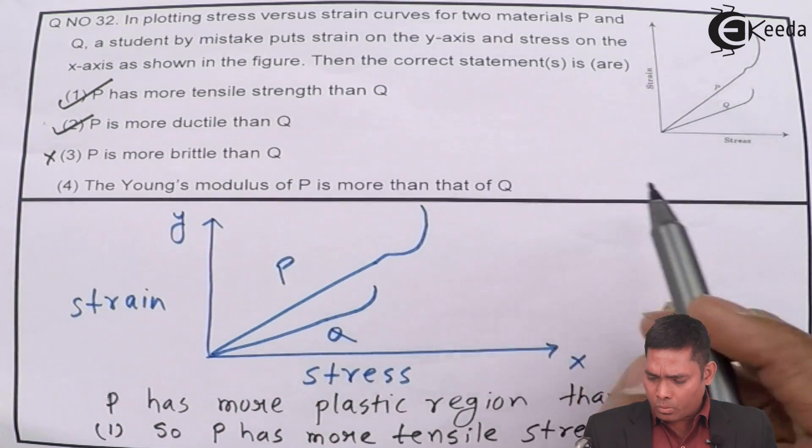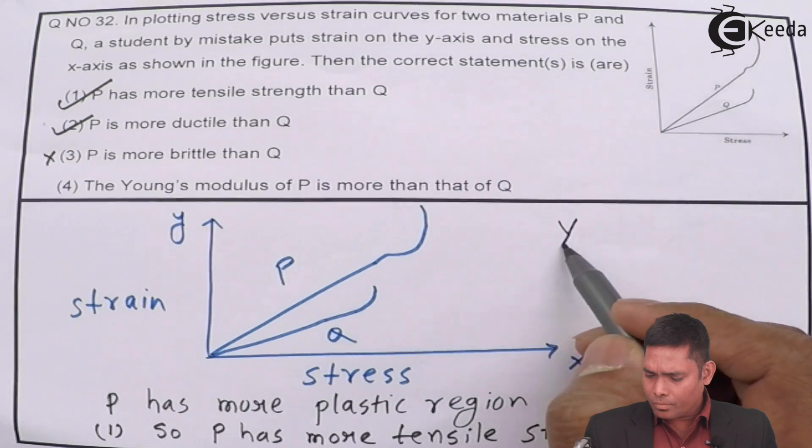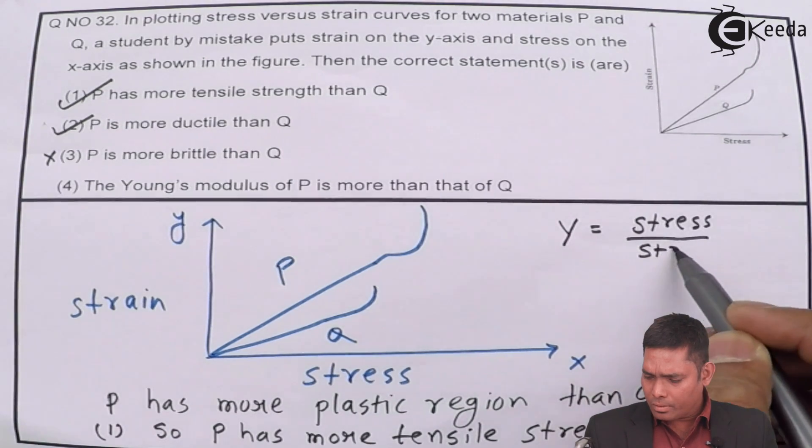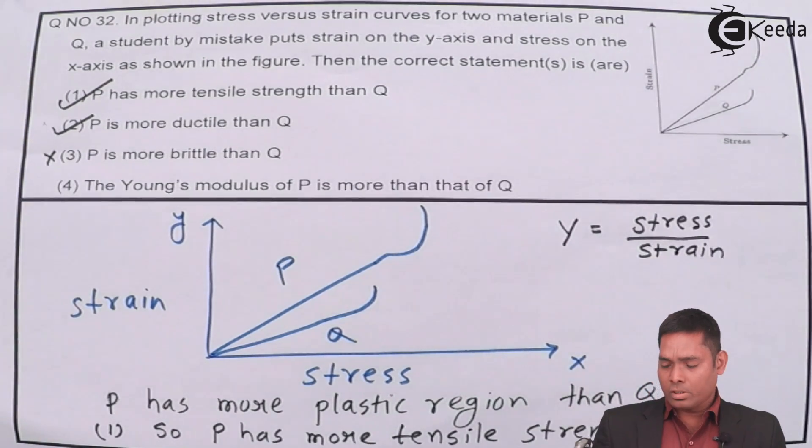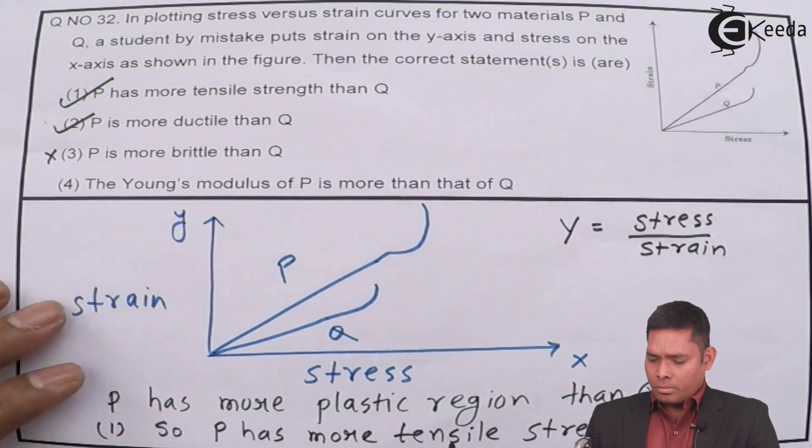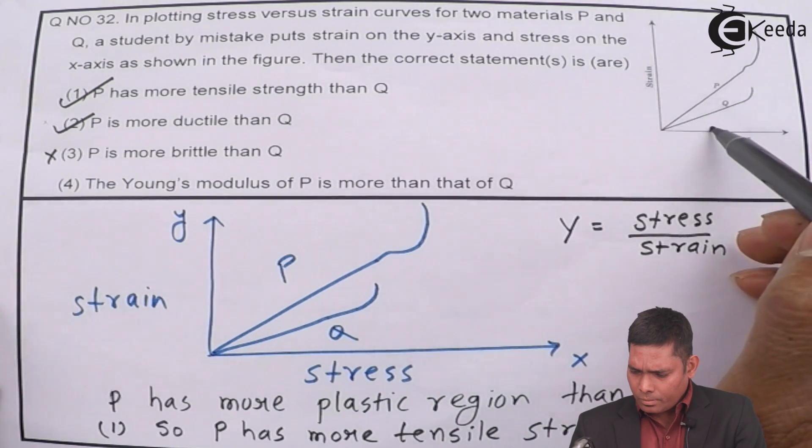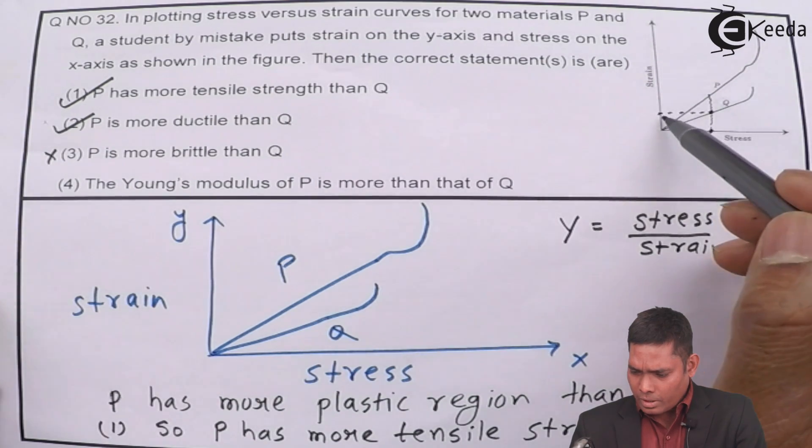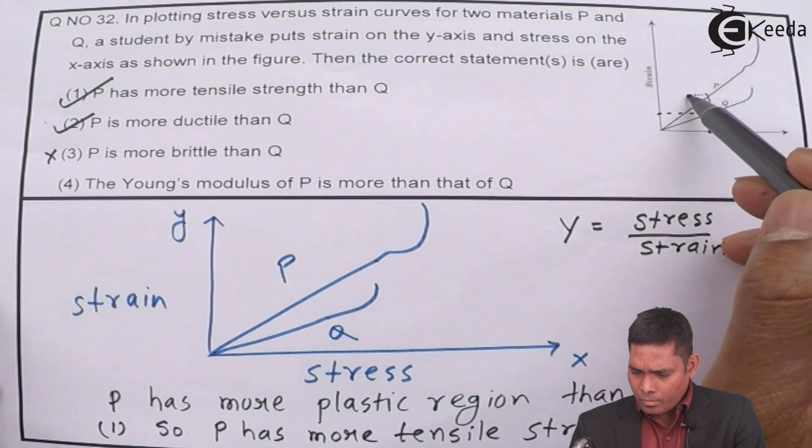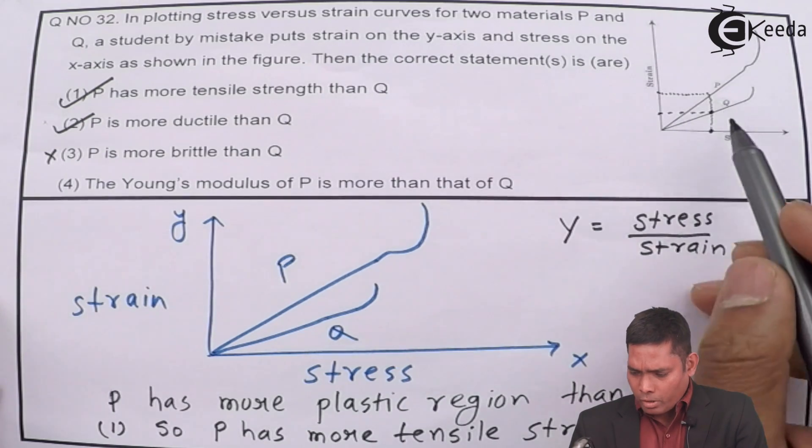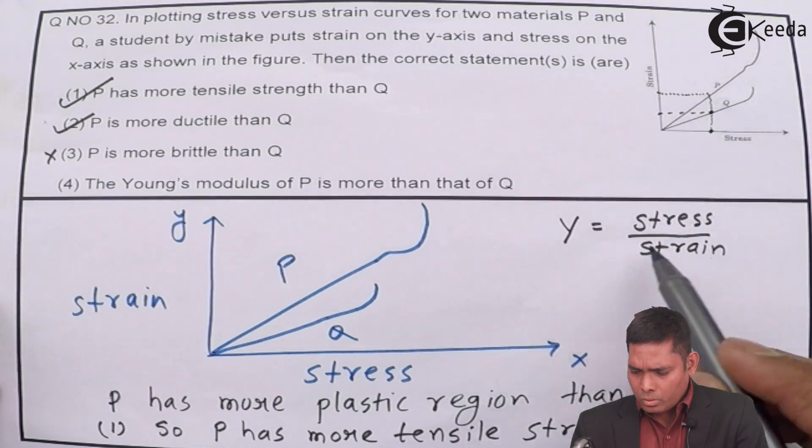The Young's modulus of P is more than that of Q. Young's modulus Y is stress by strain. This is how you define Young's modulus. If I see here for a given stress, this Q has lesser value of strain and this has greater value of strain. Strain of P is more, so Y is less.